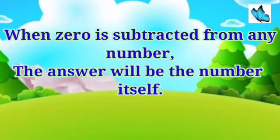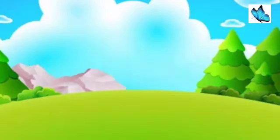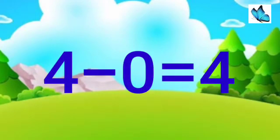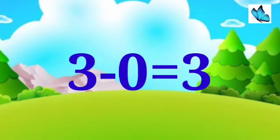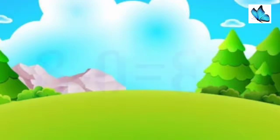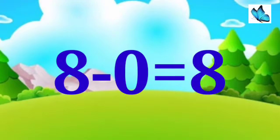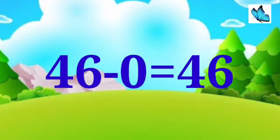When zero is subtracted from any number, the answer will be the number itself. For example, four minus zero is equal to four, three minus zero is equal to three, and eight minus zero is equal to eight. Forty-six minus zero is equal to 46.